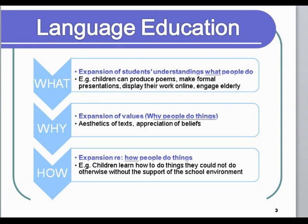You are born able to learn any language on the planet. You end up knowing one, two, three maximum — very few people learn more than that in a native way. Socialization is about reducing our options so that we can be very good at what our immediate society requires or values. Education, on the other hand, is about expanding our horizons — about us seeing more, as opposed to seeing only what's required in the immediate context of our social participation.